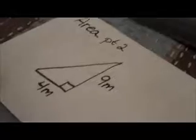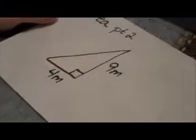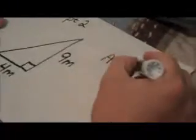I have an actual triangle here. I see that I have 4 meters and 9 meters listed. If I remember my formula correctly, area is one-half base times height.